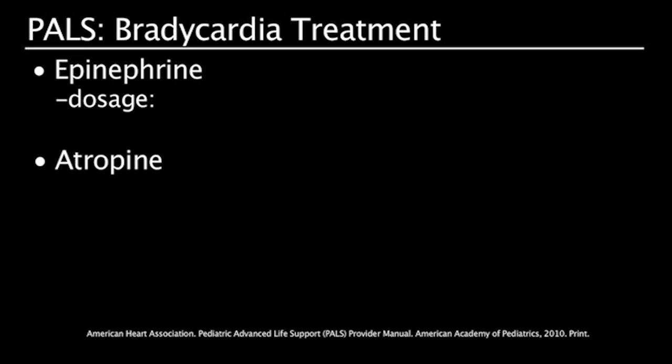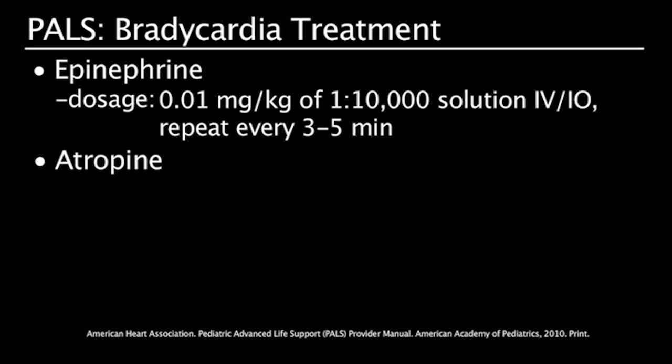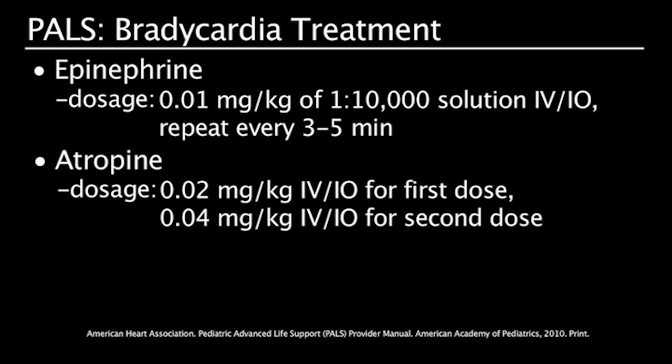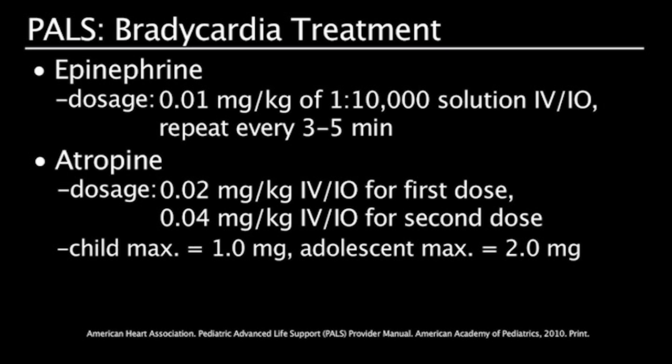The pediatric dose for epinephrine is 0.01 mg per kg of 1 to 10,000 solution, IV or IO, repeated every 3 to 5 minutes. For atropine, given IV or IO, the proper dose is 0.02 mg per kg and may double the amount for the second dose. Child maximum is 1 mg and the adolescent maximum is 2 mg.